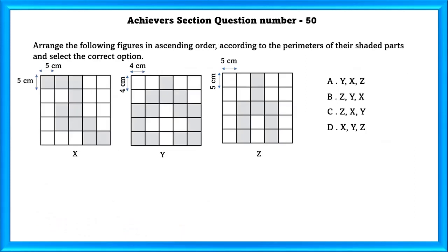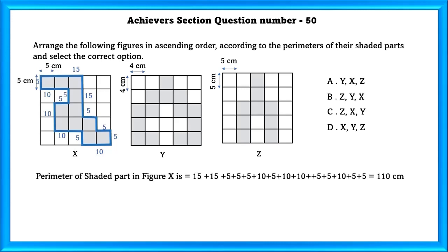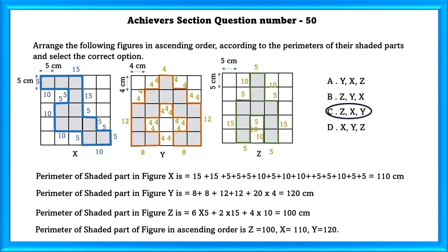Achiever section question number 50. Arrange the following figures in ascending order according to the perimeter of their shaded parts and select the correct option. Figure X. Perimeter of shaded part in figure X is equal to 110 cm. Perimeter of shaded part in figure Y is 120 cm. And perimeter of shaded parts of the figures in ascending order is equal to Z which is equal to 100 and then X which is equal to 110 and then Y which is equal to 120. So our answer is C.